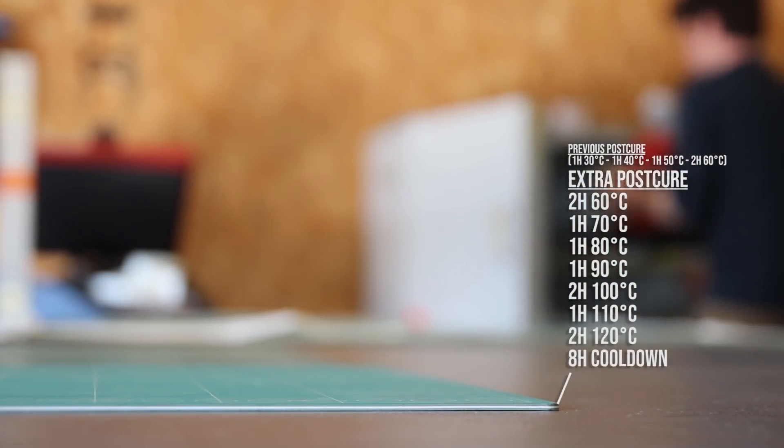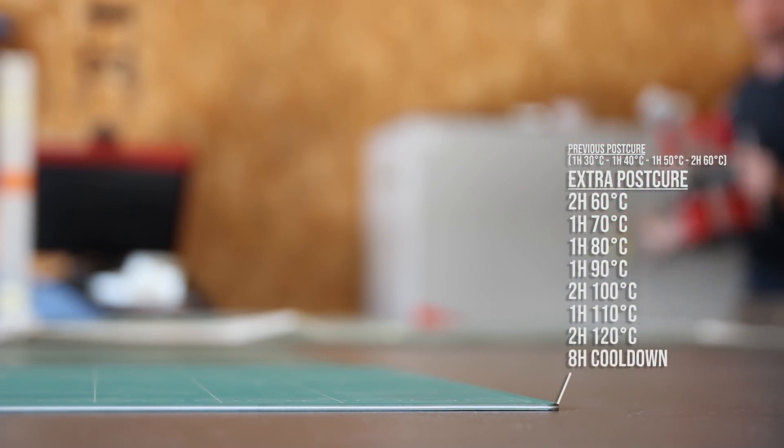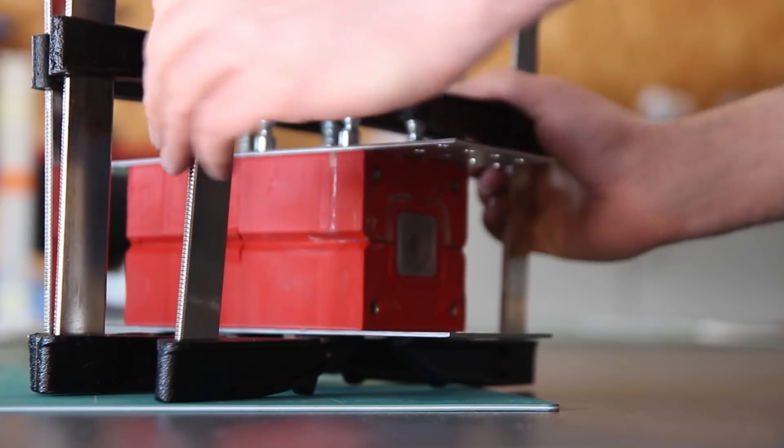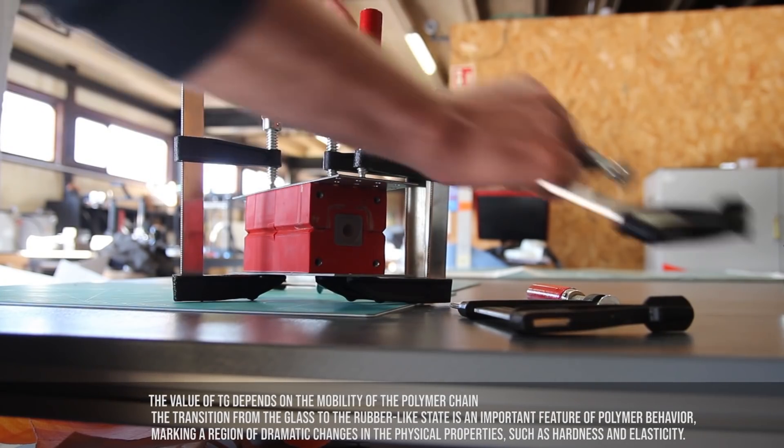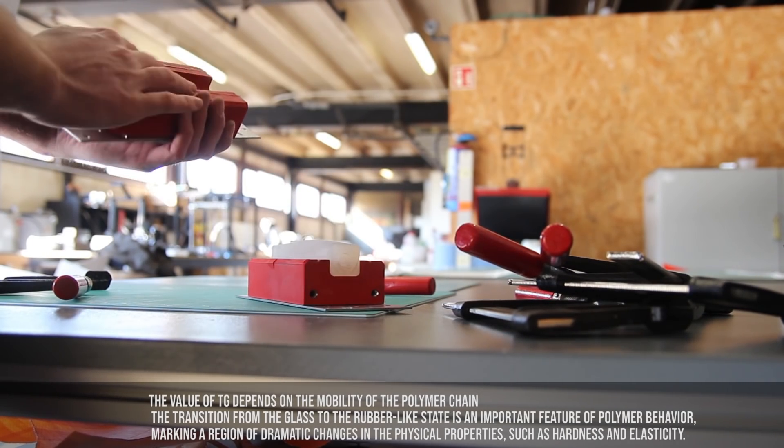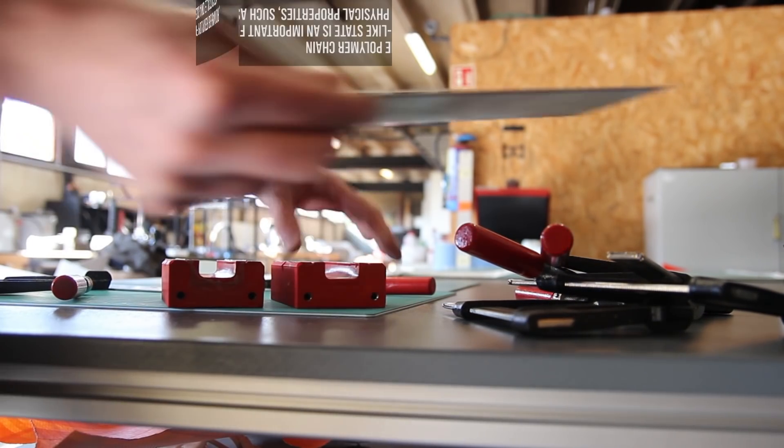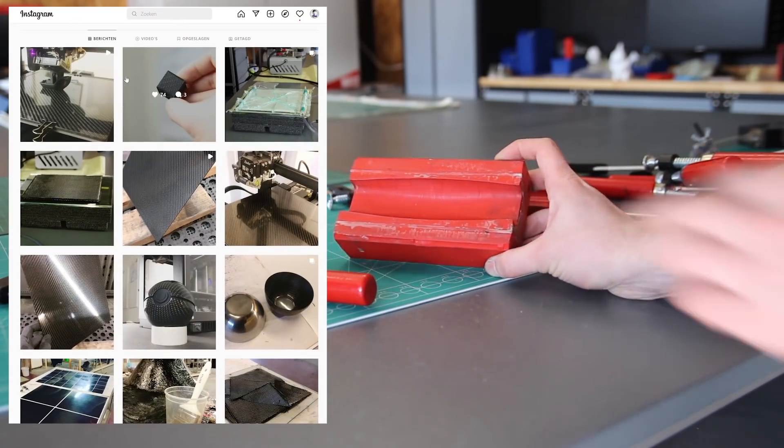If you missed the previous tutorial, make sure to check it out in the description below. As you saw in that video, I did a post-curing at 60 degrees because I was using laminating epoxy that is cold hardening at room temperature. For the prepreg we'll need high temperatures, 120 degrees, so I had to raise the TG value of these prints.